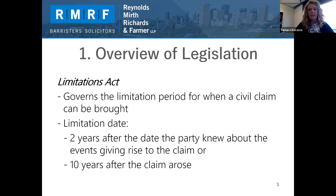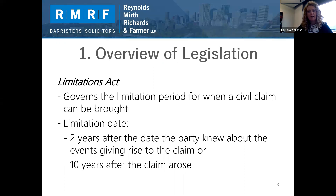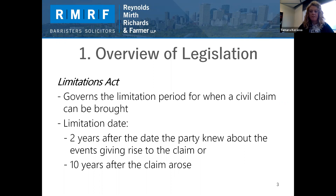One piece of legislation that may apply to your circumstances is the Limitations Act. It doesn't govern specific types of records, but it does set a general period of time that a party is able to start a civil claim or action — this is called the limitation period or the limitation date. The limitation date for civil claims is two years after the date that the party knew about the events giving rise to the claim, or 10 years after the claim arose.